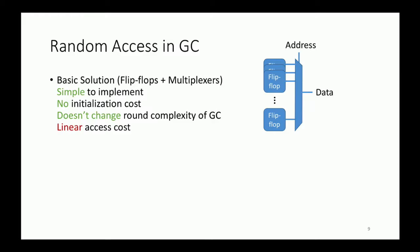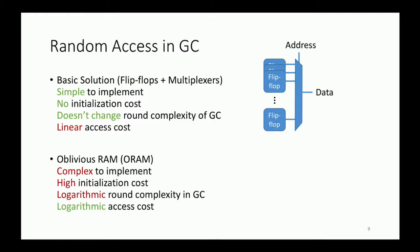A more complex but more effective solution is oblivious RAM, which has the best asymptotic logarithmic access complexity. But due to the high initialization cost of the ORAM, it doesn't outperform mux up to a certain point. So this is memory size and this is the access cost.